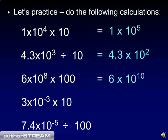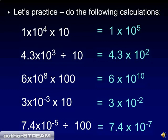3 times 10 to the minus third times 10 — remember that you want to add 1 to the exponent. Minus 3 plus 1 is minus 2, so 3 times 10 to the minus 2. And finally, 7.4 times 10 to the minus fifth divided by 100. To divide by two tens, you want to subtract 2 from the exponent, and that gives you 7.4 times 10 to the minus seventh.